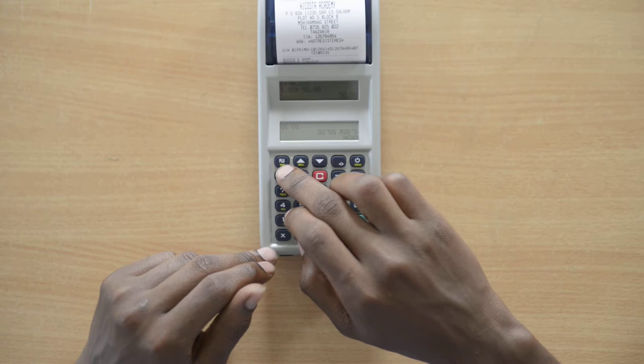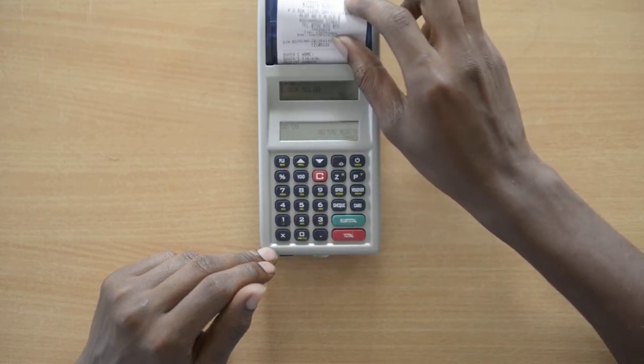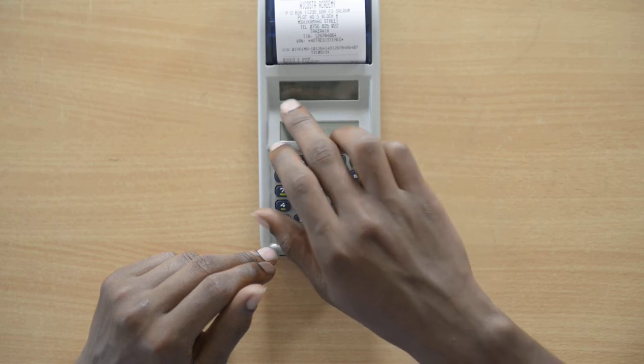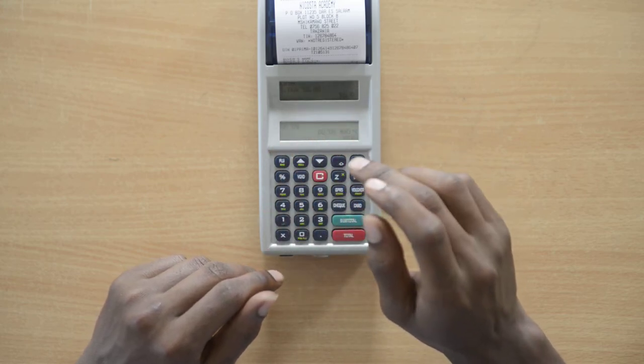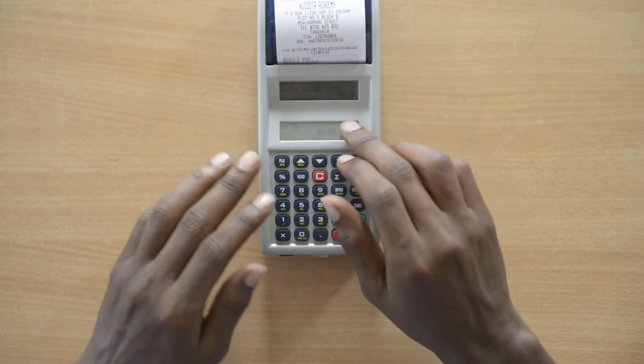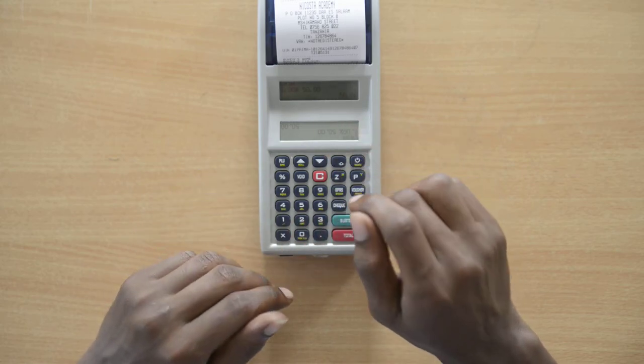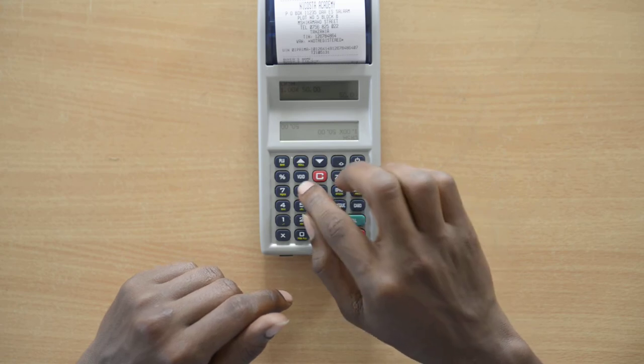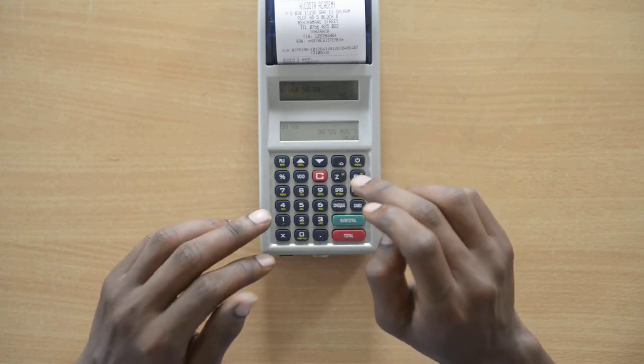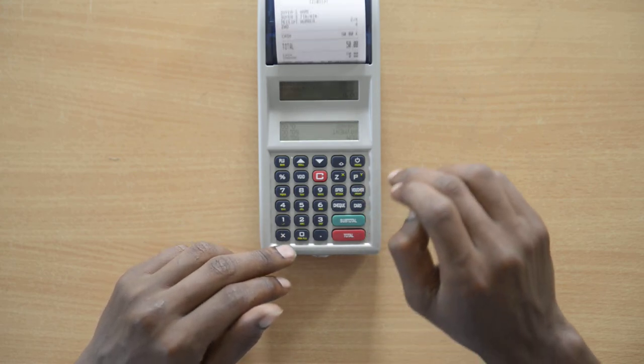When it prints out, you can confirm the amount as well as the item. If there's anything wrong, for example amount or item, you press shift and void. This is how to void. But if it is correct, you press total.